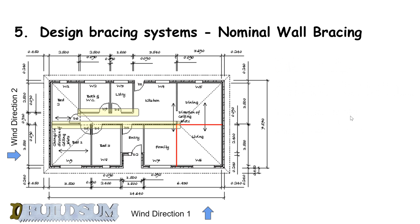If we go to double-sided walls, wall one has a total of five meters. I've taken away 900 for both doors, which gives me 3.5 meters effective bracing there.